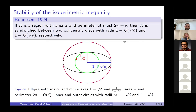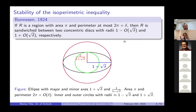To justify where the √δ comes from, consider an ellipse with semi-axes 1 + √δ and 1/(1 + √δ). This has area π and perimeter on the order of 2π + δ, and is clearly sandwiched between circles of radius 1/(1 + √δ) and 1 + √δ. Let me now show you a lovely purely geometric proof of Bonnesen's result.